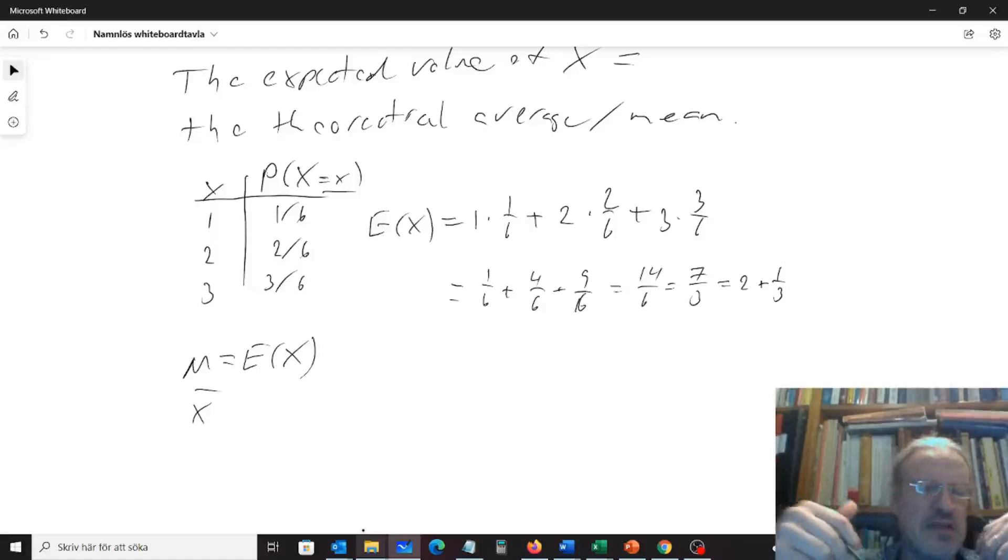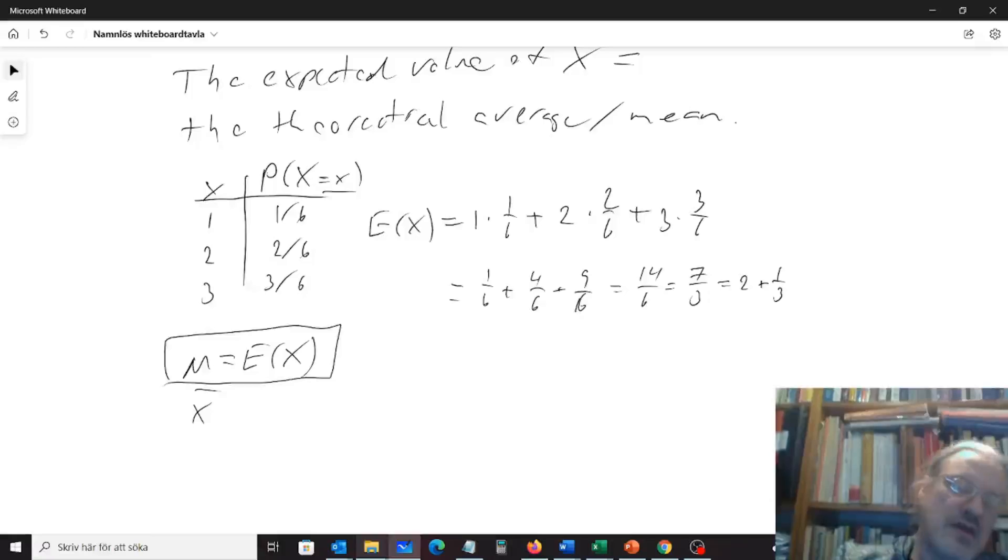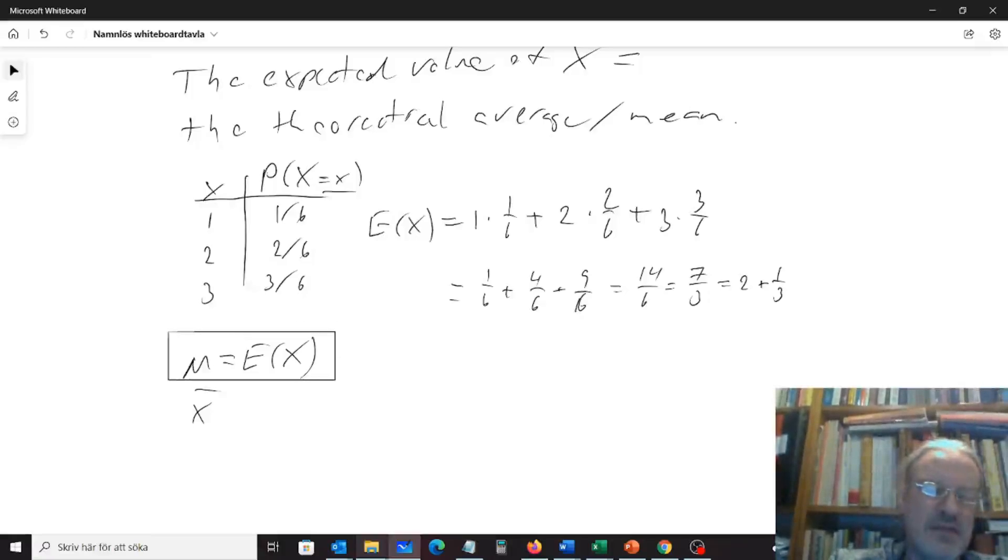And I expect that value to be close to 2 and 1 third. But it might not be that. It will actually most likely not be exactly that. So if you see something like this, then we mean the theoretical mean, so that is what we call the expected value. And if you see something like this, then we mean the average from some particular measurement or experiments or survey.